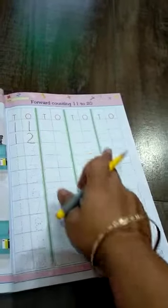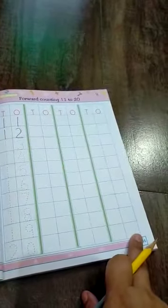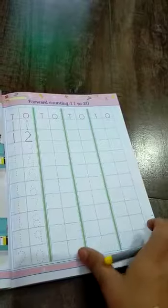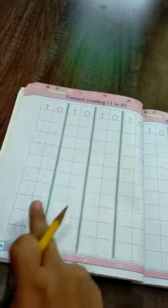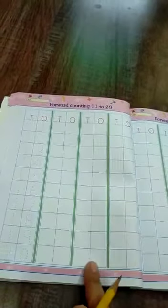What you have to do, you have to complete all this page till here. Now move to your next page, page number 36. This page is similar to your previous page. This page has also counting from 11 to 20. You also have to complete this page.